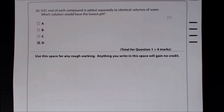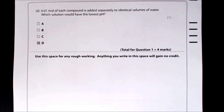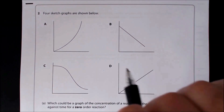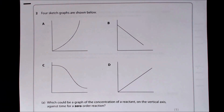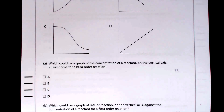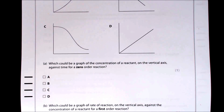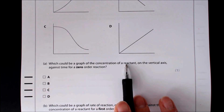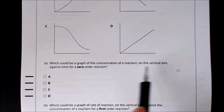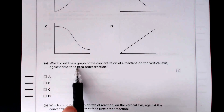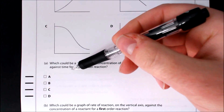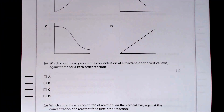Question two shows four sketch graphs. Part A asks which could be a graph of the concentration of a reactant on the vertical axis against time for a zero-order reaction. Concentration of a reactant decreases over time, so we need a curve heading downward — either B or C. For zero order, rate is unaffected by concentration, so concentration decreases linearly and smoothly. The answer is B.